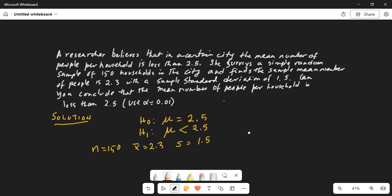And alpha or level of significance. Alpha is the maximum probability of rejecting H0 when it is true. That alpha is given as 0.01.